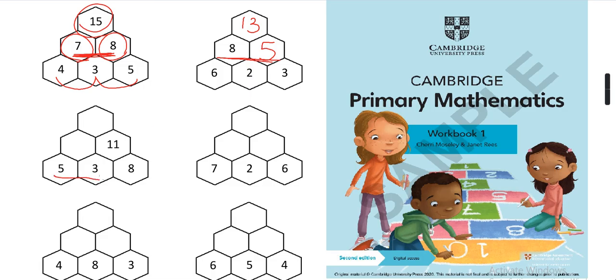3 plus 5 will give us 8, and 3 plus 8 will give us 11. 11 plus 8 will give us 19.